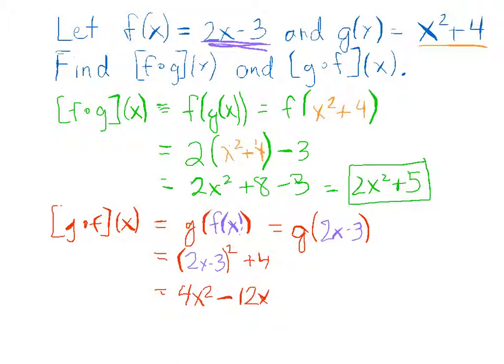And then the third term, you have to take this negative 3 and you have to square that. So if you take that negative 3 and square that, that means you're going to get a plus 9.